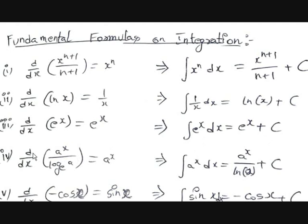We know that d/dx of a^x is a^x · ln a. So if we divide both sides by ln a, we get d/dx of (a^x / ln a) equals a^x. It means the integral of a^x dx is equal to a^x / ln a plus an arbitrary constant c.